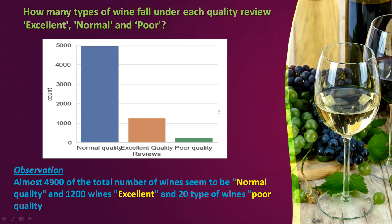How many types of wine fall under each quality review — excellent, normal, and poor? Based on the histogram, we observe that normal quality wine occupies the most, around 4,900 wines, while 1,200 wines come under excellent quality and 20 wines fall under poor quality.